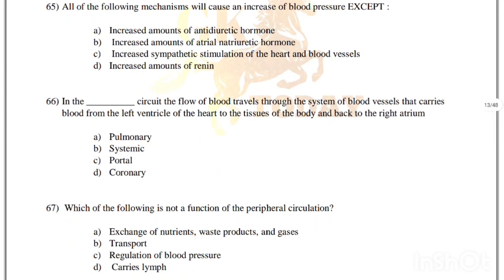All of the following mechanisms will cause an increase in blood pressure except: increased amounts of antidiuretic hormone; increased amounts of atrial natriuretic hormone; increased sympathetic stimulation of heart and blood vessels; increased amounts of renin. Correct answer is option B, increased amounts of atrial natriuretic hormone.